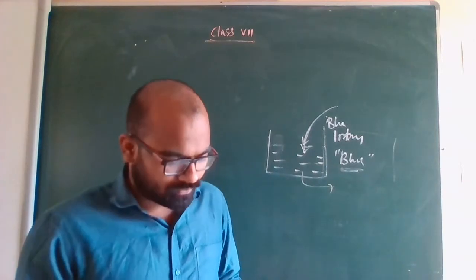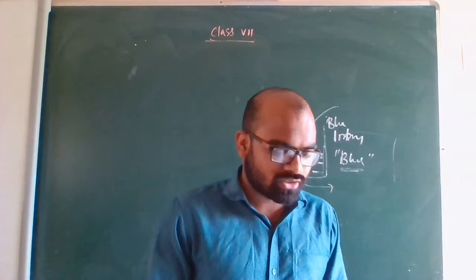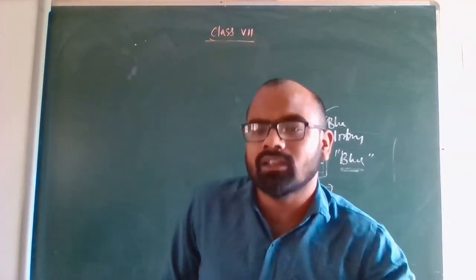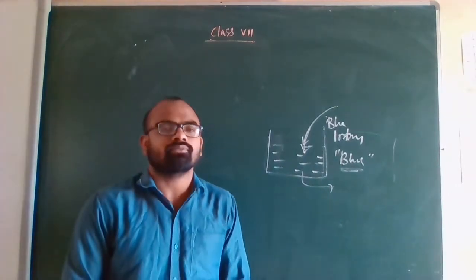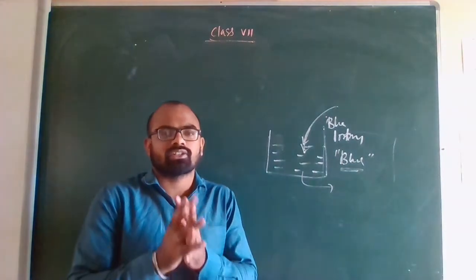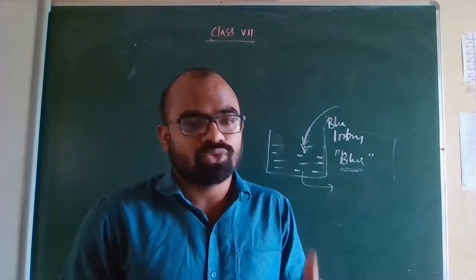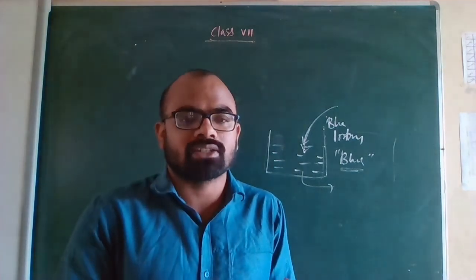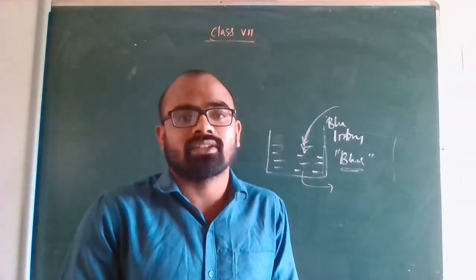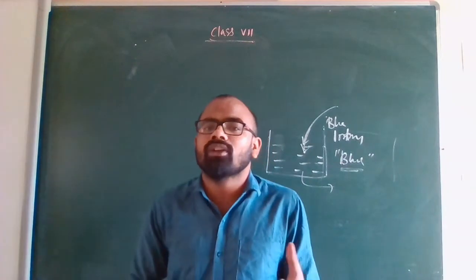So this ends the chapter. We have already understood it. This is the end of Acids, Bases and Salts. Let me quickly revise in 5 minutes. So acids — the chapter starts with acids. What are acids? They are sour in taste. You learned natural acids: formic acid, ascorbic acid, lactic acid, tartaric acid, oxalic acid, citric acid — all found in different fruits.